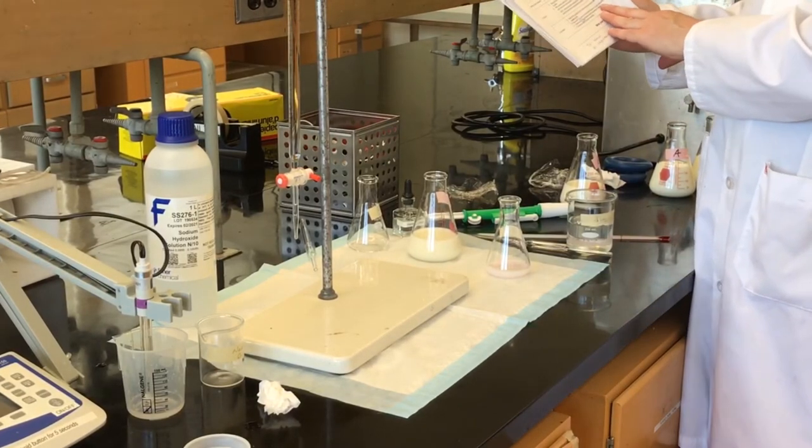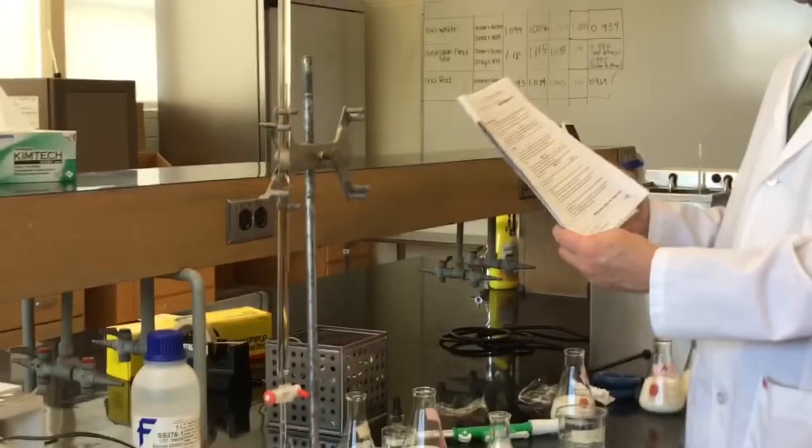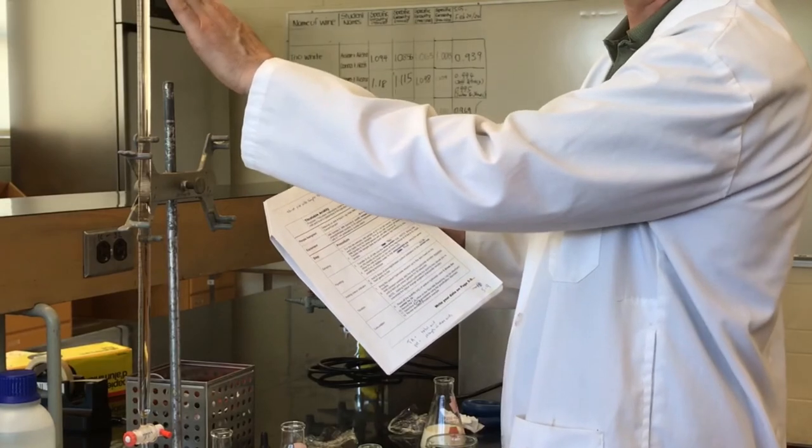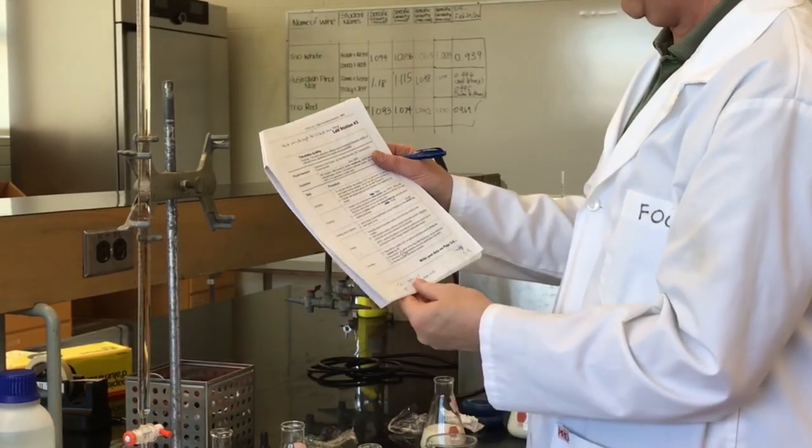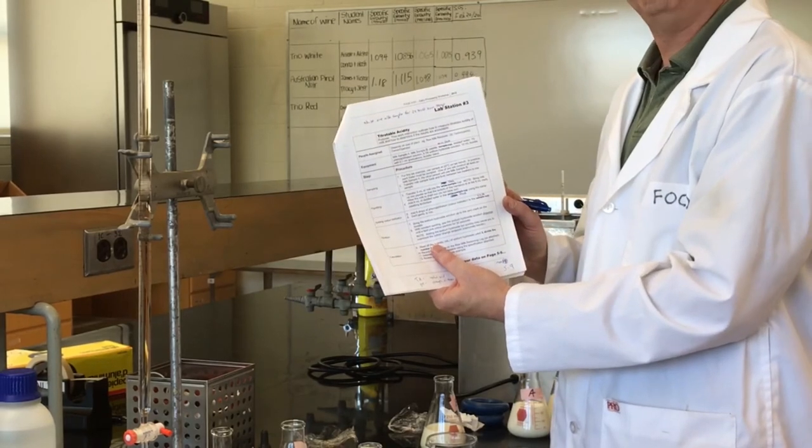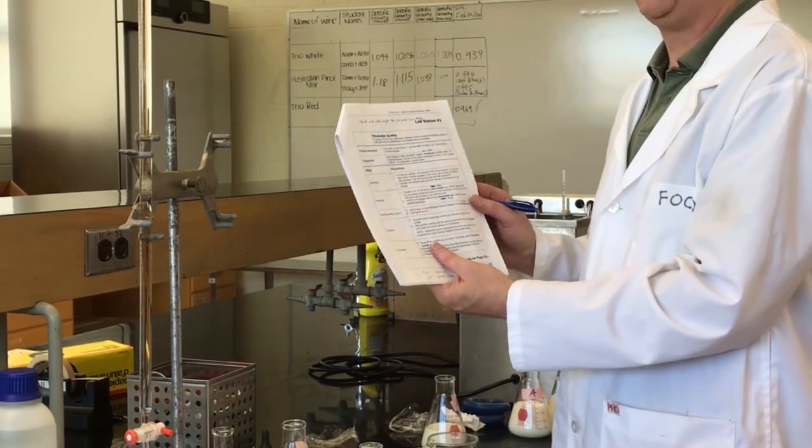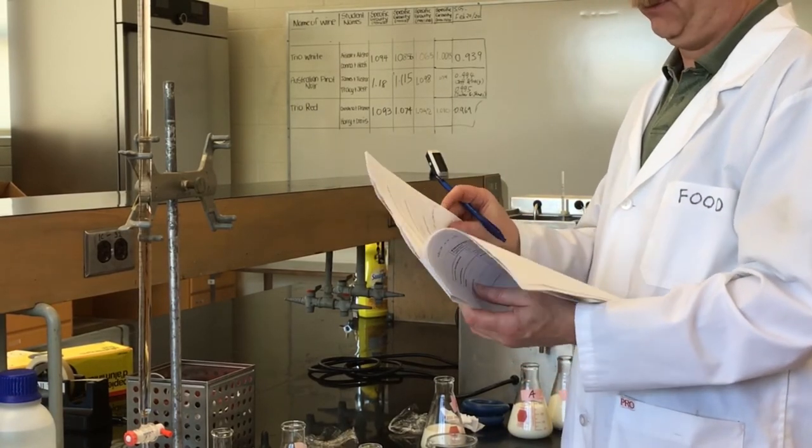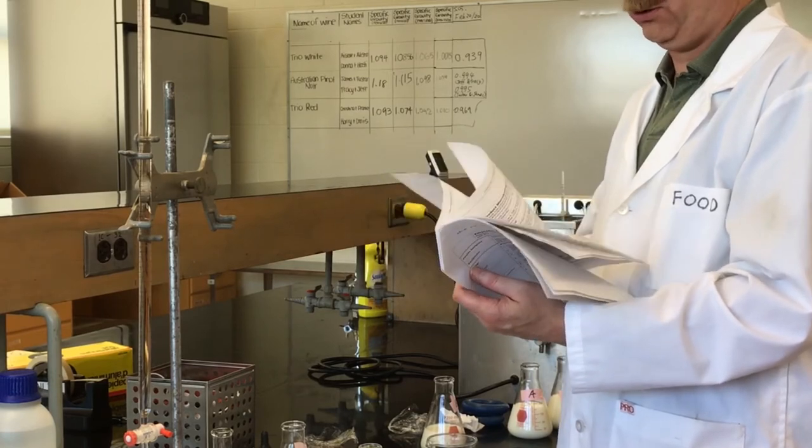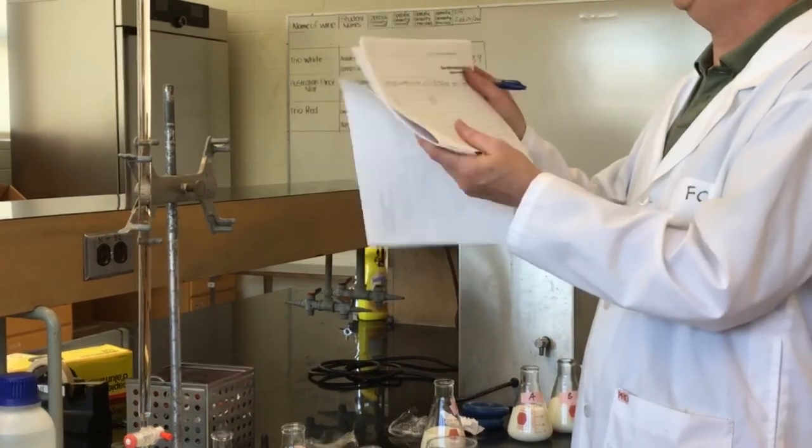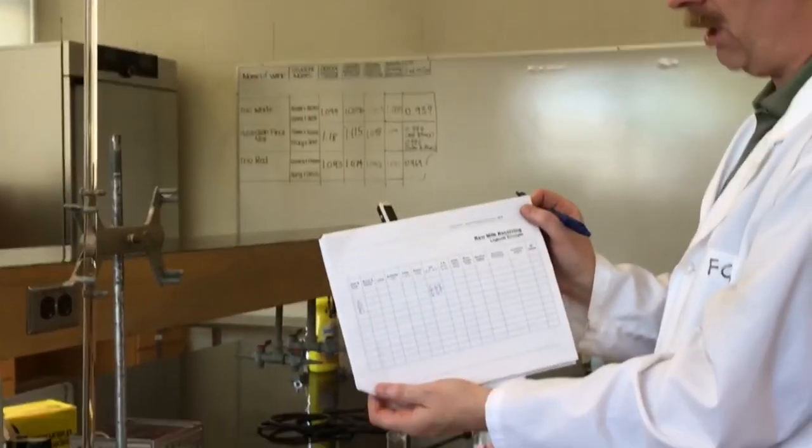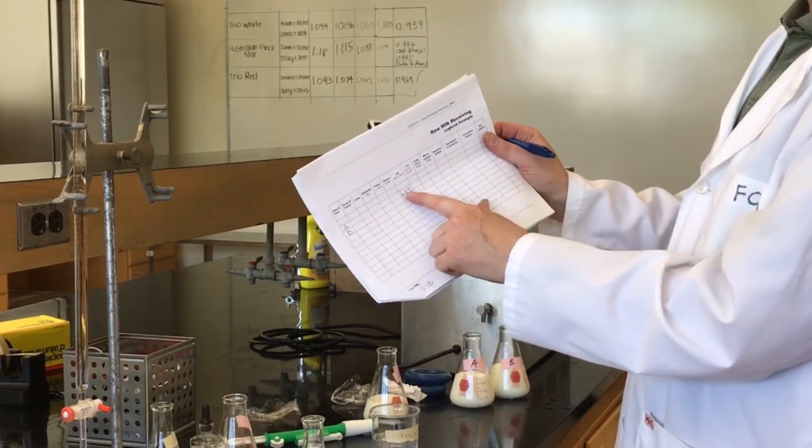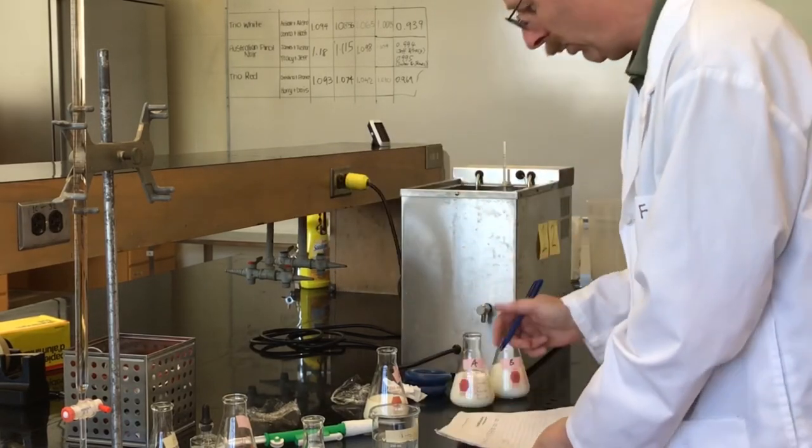At this point, I need to record the end volume, which is 1.8. I started with 0.1, so I've used a total of 1.7 mils. So turning to the instructions, you will see in the calculation section at the bottom, you're looking at recording the volume of sodium hydroxide, which in this case is 1.7 milliliters, and we just simply divide by 10. We're going to record the value, so 1.7 divided by 10 is 0.17.